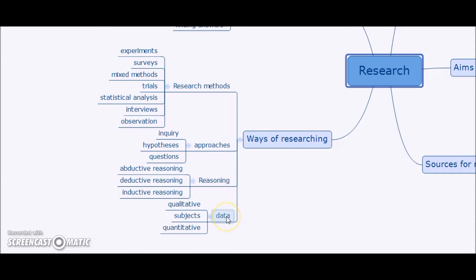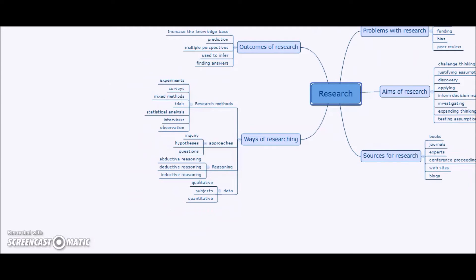And there's different types of data that we might gather. We might gather qualitative data. We might gather quantitative data. We might be gathering data from different types of subjects. So depending on the aims of our research, we might choose different ways of researching, and trying to find the appropriate match between the aims and the ways.